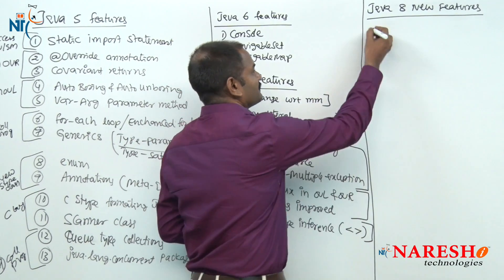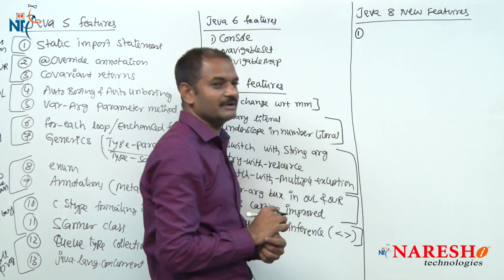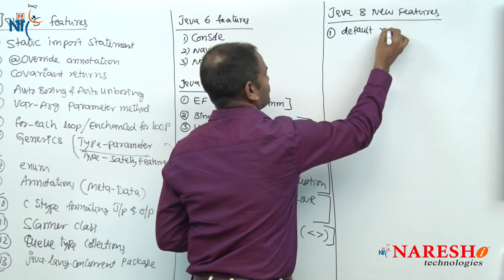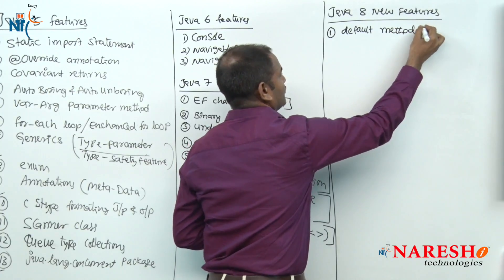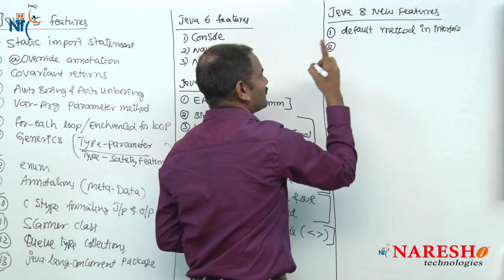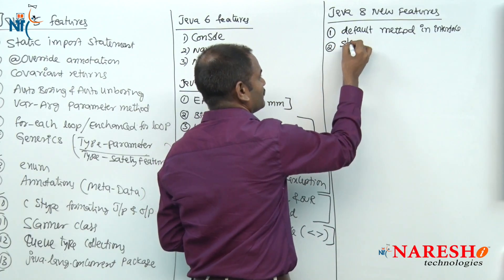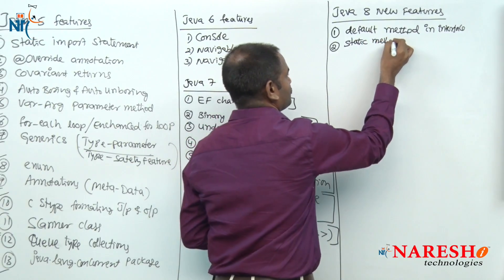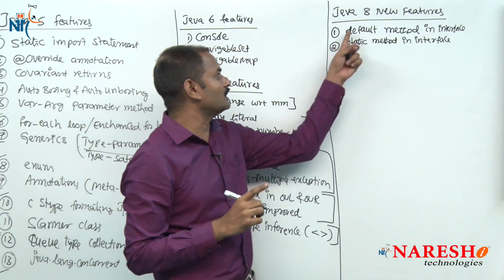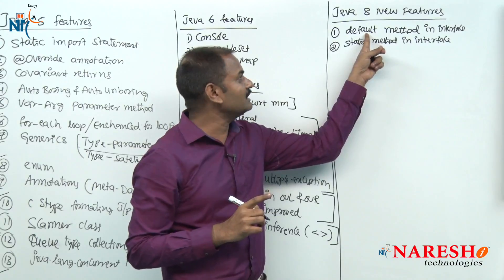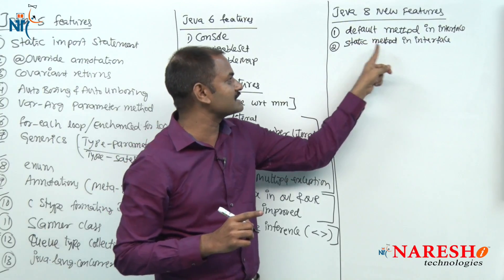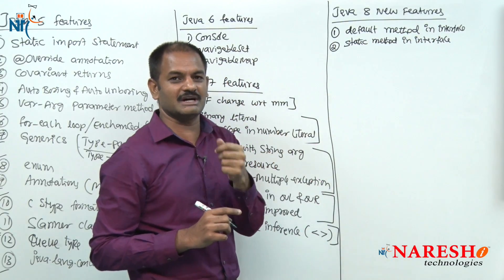Let us try to write around 15 features. The first concentration is on interface problem solving. To solve interface problems, we got something called a default method in interface. This default method created one problem, and to solve that problem they gave one more concept called a static method in interface. So two concepts came to solve the interface problem: default method and static method in interface. That is the first feature of Java 8.